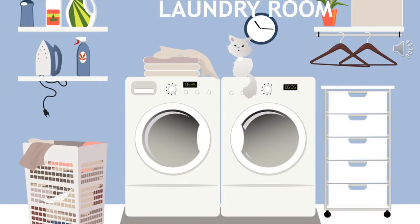This is my laundry room. I always wash my clothes here. Sometimes I'm singing a song while washing clothes. Now, look around you. What are the things that need electricity to work? Does the cat need electricity to work? Absolutely no — the cat doesn't need electricity to work. So, can you tell me now? Yes, there are iron, washing machine, and watch. Excellent, you are really good!